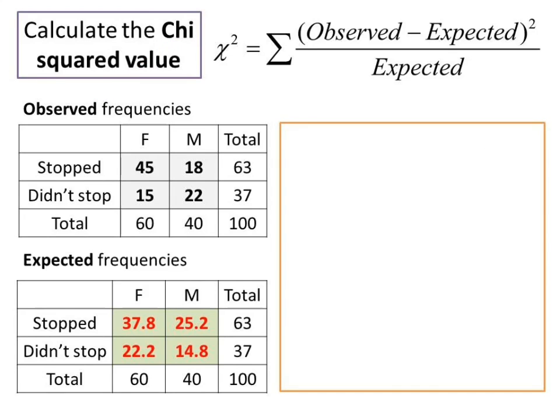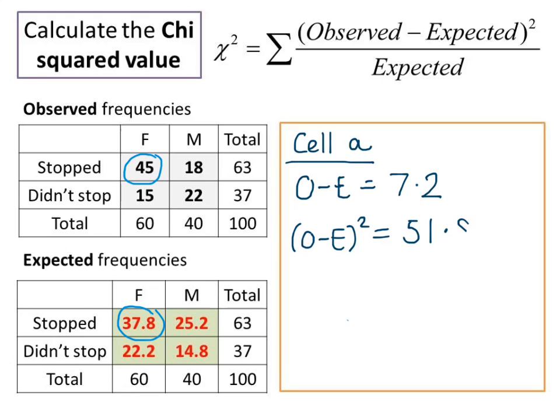We'll start with cell A and calculate the bit in brackets, which is the observed value minus the expected value. Then we'll square it. Then we'll divide by the expected frequency. I've rounded to two decimal places, but it's best to use the unrounded figure for the final part of the calculation.